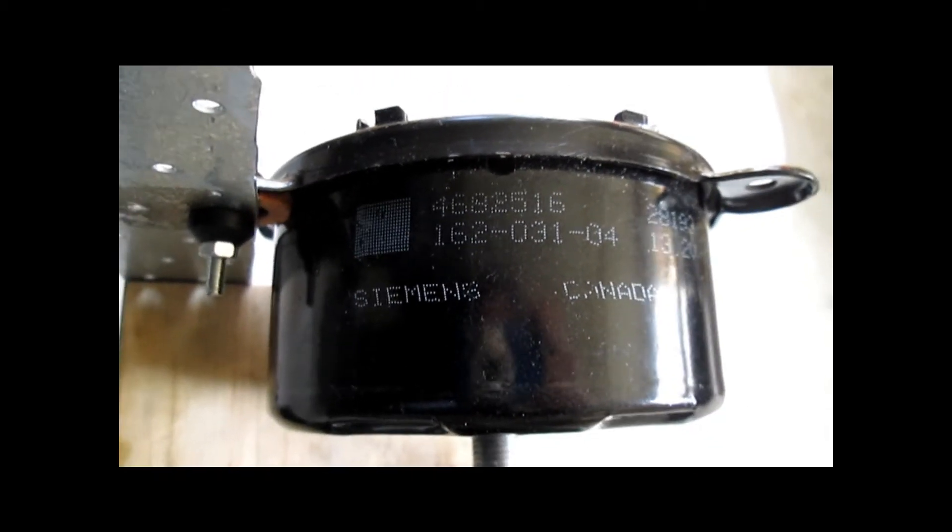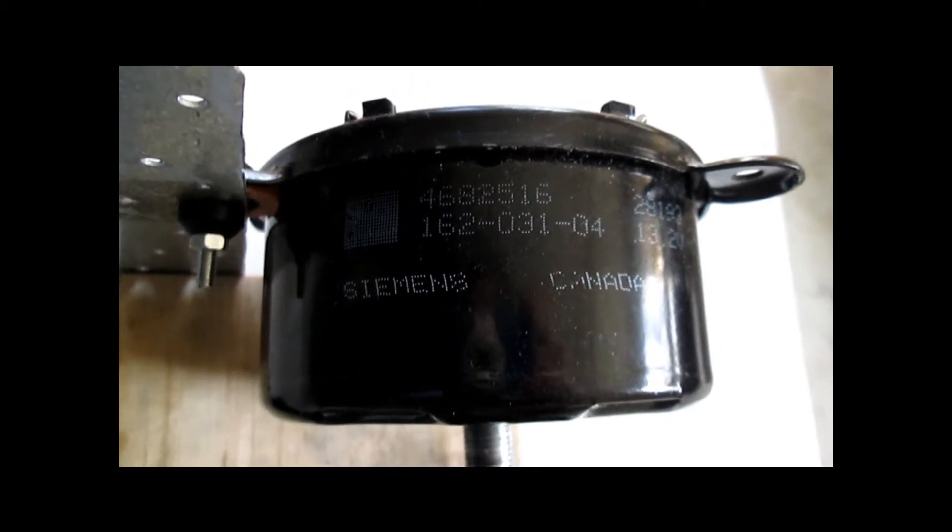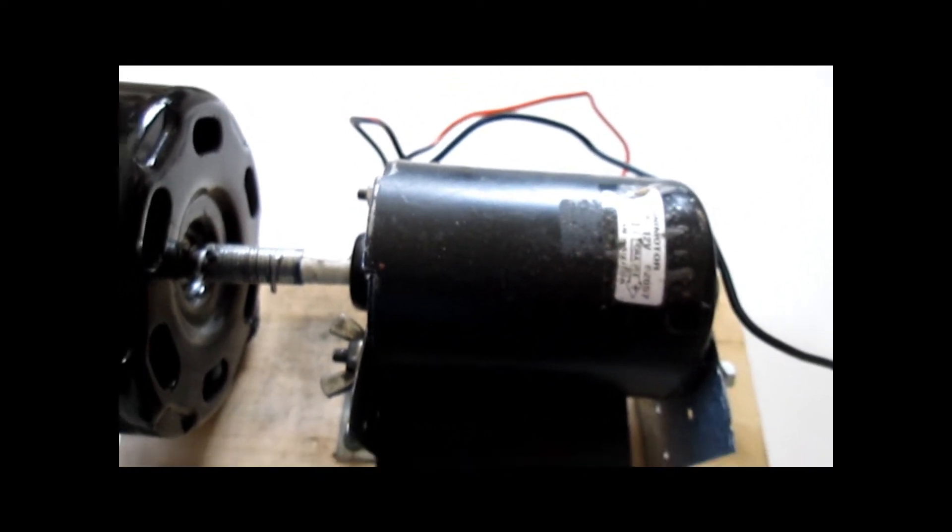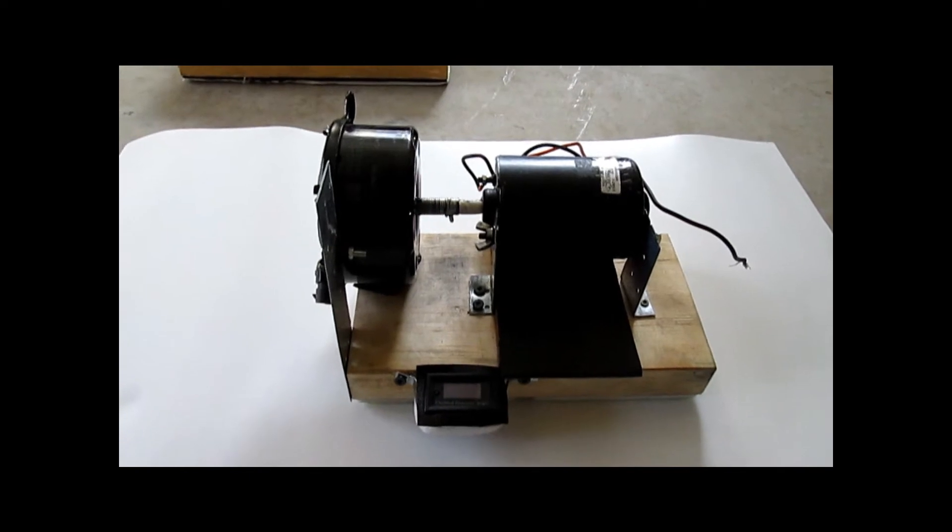Siemens motor. And this one is a brushless DC, whereas this one is a permanent magnet motor that we use. So they're going to have a different magnetic waveform.